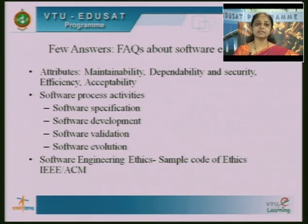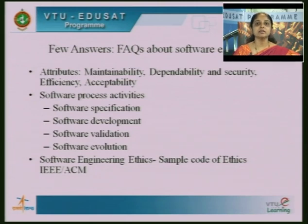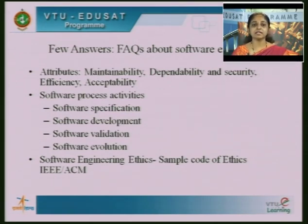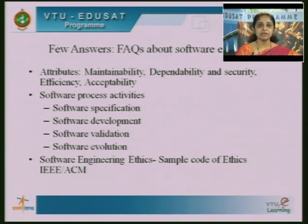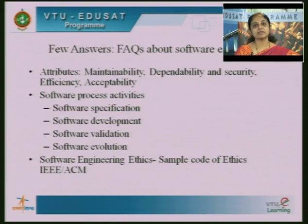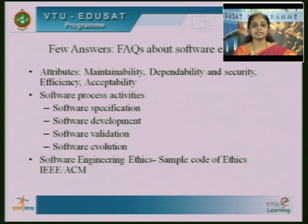We discussed the general software process activities involved in most software development models: software specification, development, validation, and evolution. Some models may have additional activities in between, or some activities may be coupled with others, but these four are the general processes that should exist for the development of every software product.